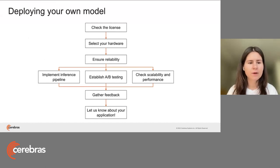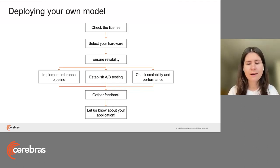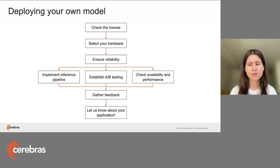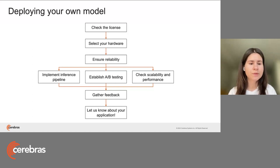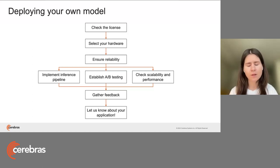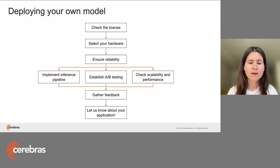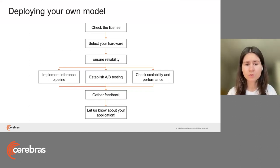In the interest of time, I'm going to talk about the general practices for developing and deploying your own model. The first thing I would check, if I'm using a pre-trained checkpoint created by someone else, is the license. Cerebras GPT is shared with the Apache 2.0 license, so you can basically do whatever you want. But if you take a LLaMA model, the license is very strict. The next thing I would do is select my hardware, whether I want to retrain from scratch or fine-tune — what is the best hardware given my budget.